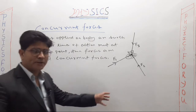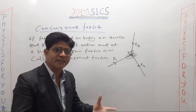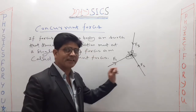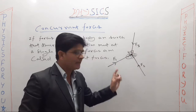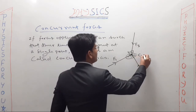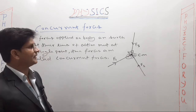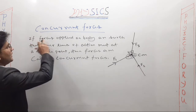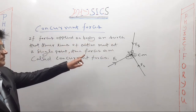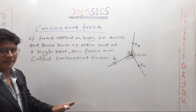It's very simple — if we apply many forces on a body and all those forces' lines of action meet at a single point, then the name we give to those forces is concurrent forces. You can see in this diagram three forces F1, F2, and F3 are acting on a body, and their lines of action meet at a single point — the center of mass — so F1, F2, and F3 are called concurrent forces.